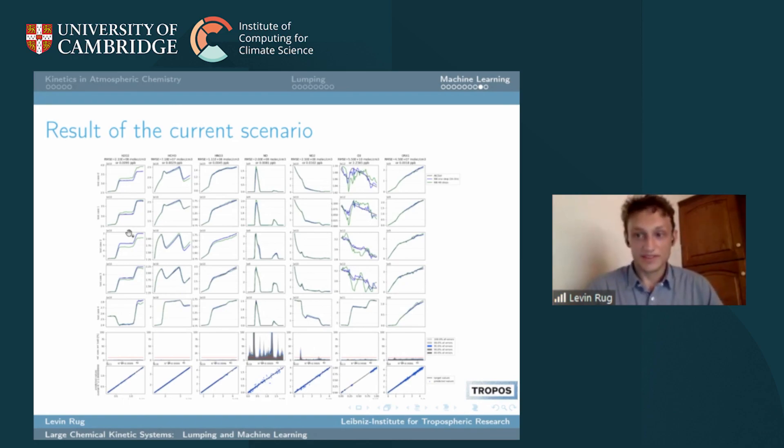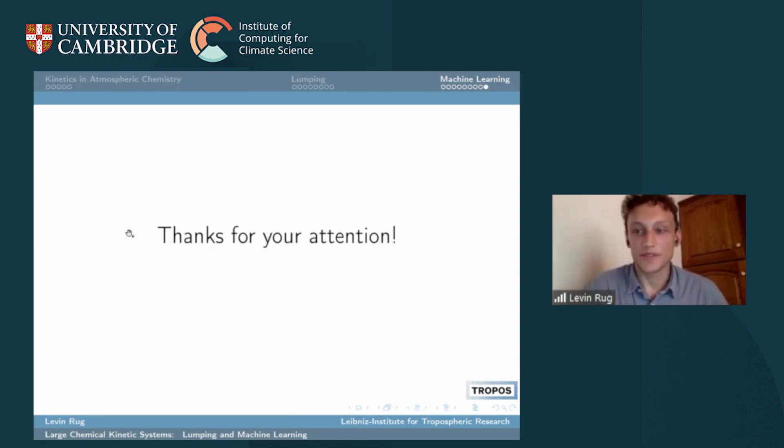So these are two methods: one is analytically understandable, we can have a look into a lump mechanism and see what is happening there, but not so fast. The second one is machine learning which is also accurate in the testing data set and very much faster. We will try to investigate how much usability there actually is by implementing it into bigger models, but we didn't do that yet. Thanks very much for your attention.